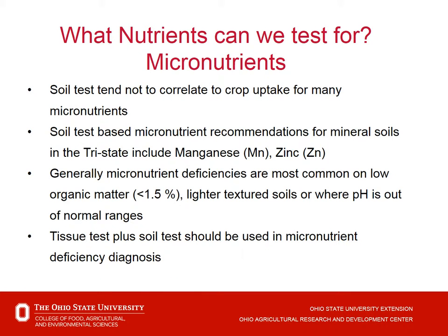So what about micronutrients? Those are the other nutrients we can test for. Soil tests tend not to do a very good job correlating to crop uptake for many of our micronutrients. However, soil tests for manganese and zinc do correlate fairly well, and we can test for those and get a good approximation of what we ought to be doing for those two nutrients.